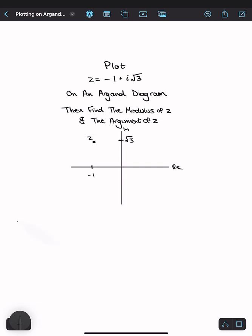Now let's find the modulus of z which is the straight line distance joining the origin to that point on the Argand diagram like this.